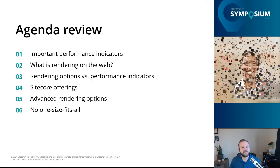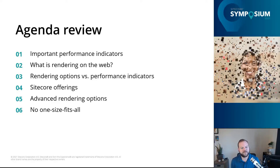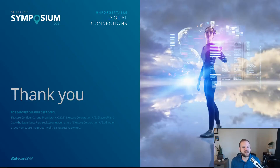So we covered quite a bit today. We looked at important performance indicators: time to first byte, first contentful paint, largest contentful paint, and time to interactive. We talked about what rendering is on the web and our three main options — server-side rendering, client-side rendering, and static site generation — comparing their performance indicators. We looked at how Sitecore fits in, touched on advanced rendering options and two-pass rendering, and reinforced that there's no one-size-fits-all. Really think about the long-term considerations for your projects. Thank you for having me at Sitecore Symposium 2021.